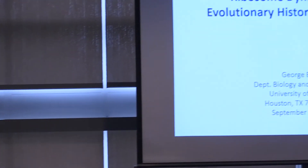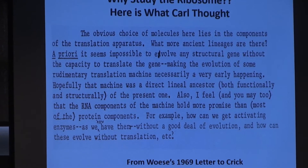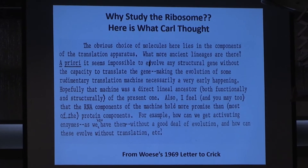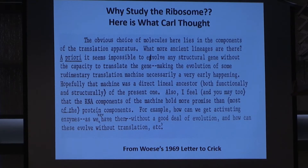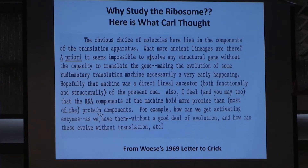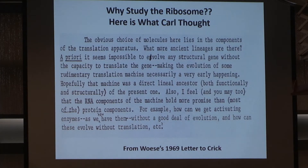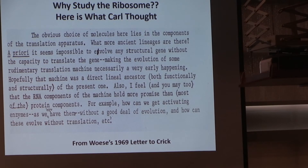I would interject that I think Harry Naller has looked at a lot more ribosomes than I have. I want to talk today about the ribosome and where it came from and what happened to it after it got started. And there's a reason for this — this slide comes from the now infamous letter from Carl to Francis Crick in 1969. In this letter, Carl explains several things about phylogeny, and he said: 'What more ancient lineages are there? A priori, it seems impossible to evolve any structural gene without the capacity to translate the gene, making the evolution of some rudimentary translation machine necessarily a very early happening. Hopefully that machine was the direct linear ancestor of the present one. I feel that the RNA components of that machine hold more promise than most of the protein components.' And that has ultimately been our experience. So basically, the reason we work on ribosomes is because Carl told us we should.